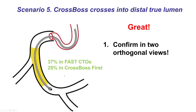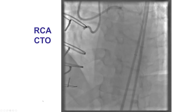The fifth possibility, which happened in approximately a third of the cases in the first CTO trial and about a quarter in the CrossBoss First trial, is to enter into the distal true lumen. Before doing anything, one has to confirm entry into the distal true lumen, done by orthogonal views or, if there is still uncertainty, by taking a workhorse guide wire and ensuring it advances smoothly into the distal true lumen.